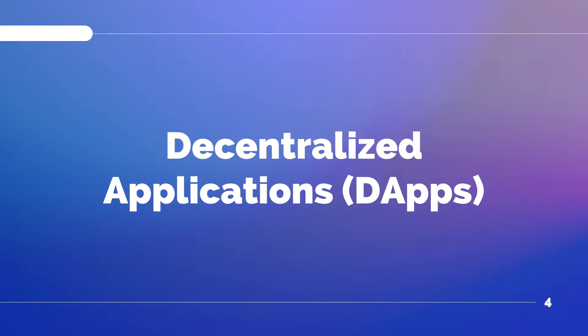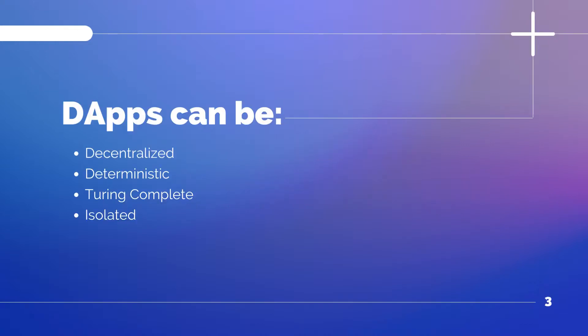To summarize how DApps work: DApps are decentralized, meaning they are independent and no one has the ability to control them as a group. DApps are deterministic, meaning they perform the same function anywhere they are executed. DApps are Turing complete, meaning that when given the resources they require, they can perform any action. DApps can also be isolated — they are executed in a virtual environment known as EVMs, Ethereum Virtual Machines. So if they have bugs, they won't interfere with the function of the blockchain network itself.